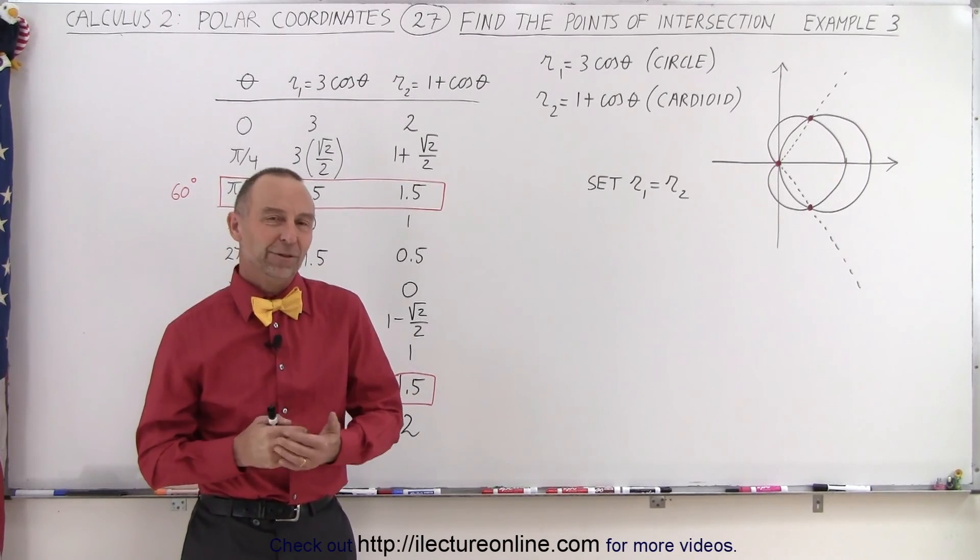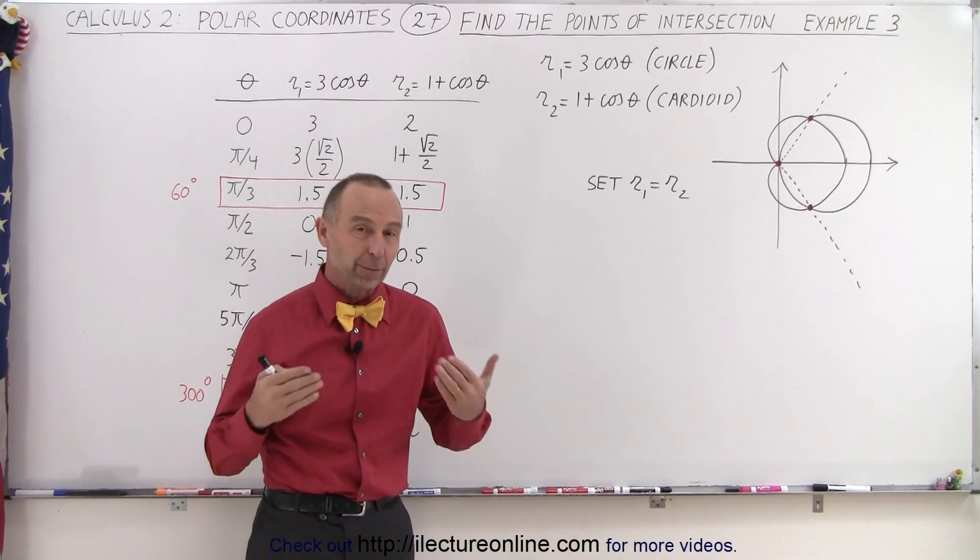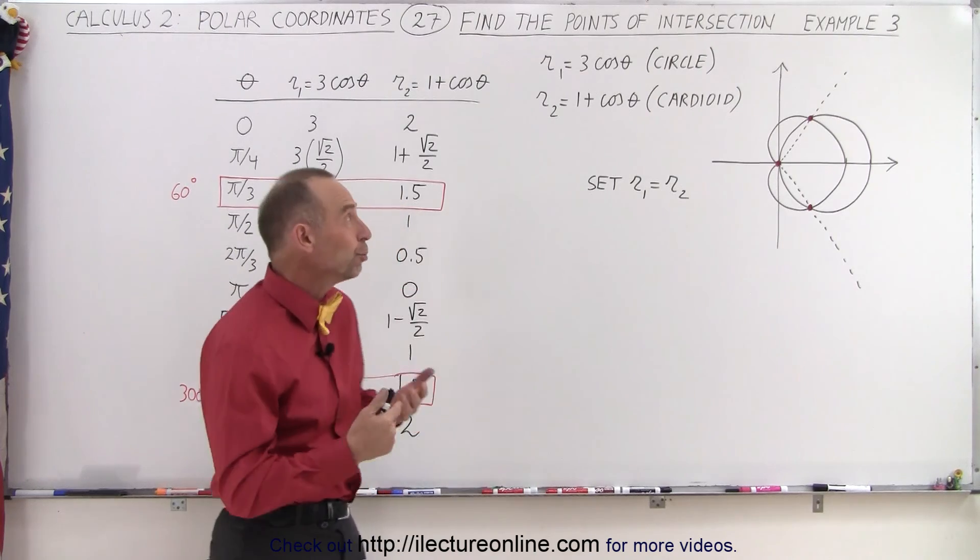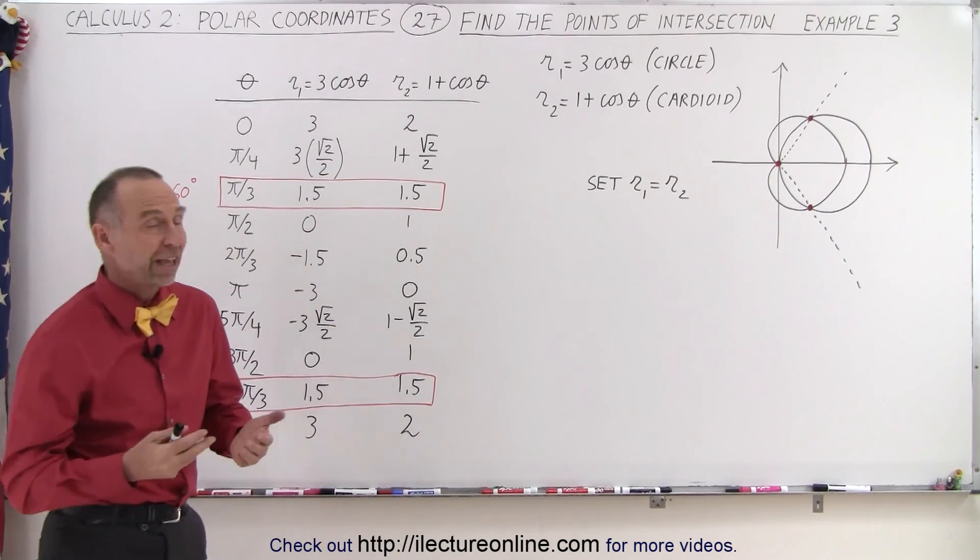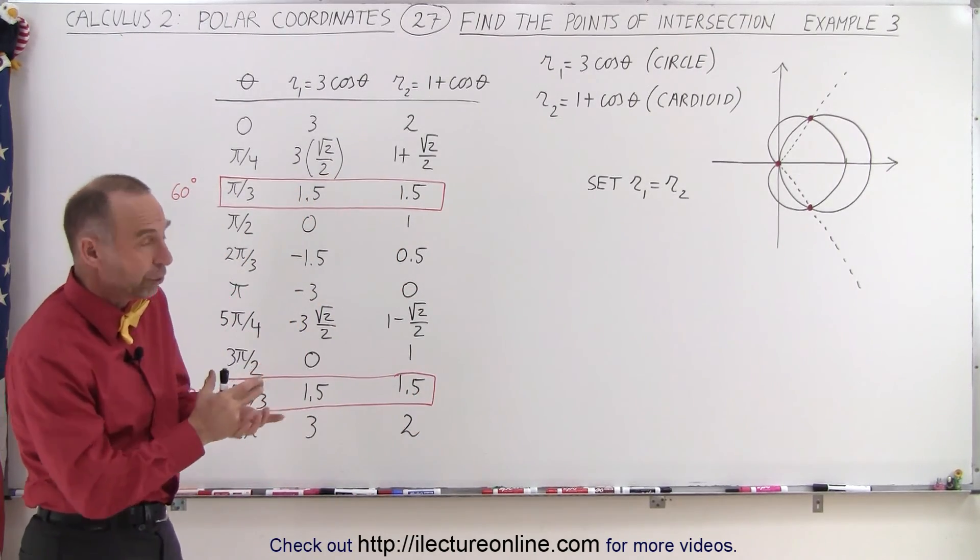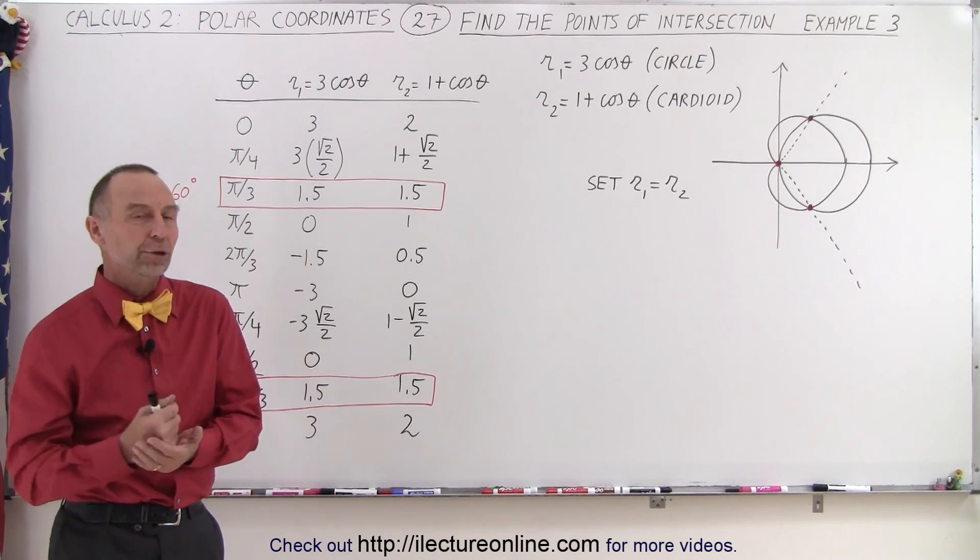Welcome to our lecture online. Here's our third example of how to find the points of intersection when we have two polar equations. In this case, we're combining the equation of a circle with the equation of a cardioid.